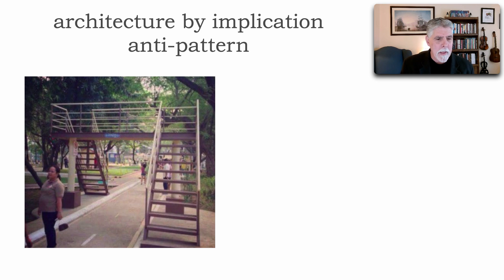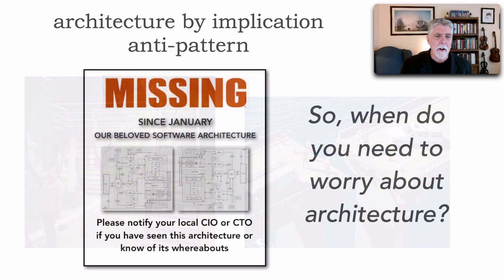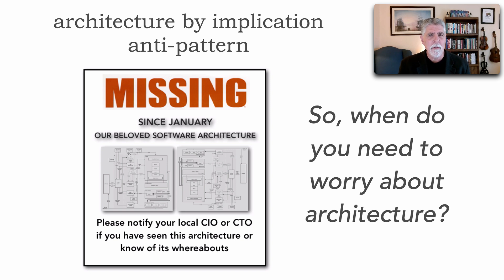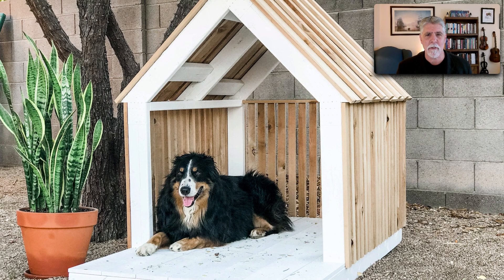Somebody decided to put a pedestrian bridge over this small road that looks like a bicycle path. And of course the classic example of architecture by implication is the bridge not meeting at the ends. So when we start talking about architecture by implication — when do we need to worry about an architecture? When should we stop and say we should have some architecture in place before we start coding? If you need to build a doghouse, you don't need an architecture. What you need is a truck to go buy lumber and nail it together.